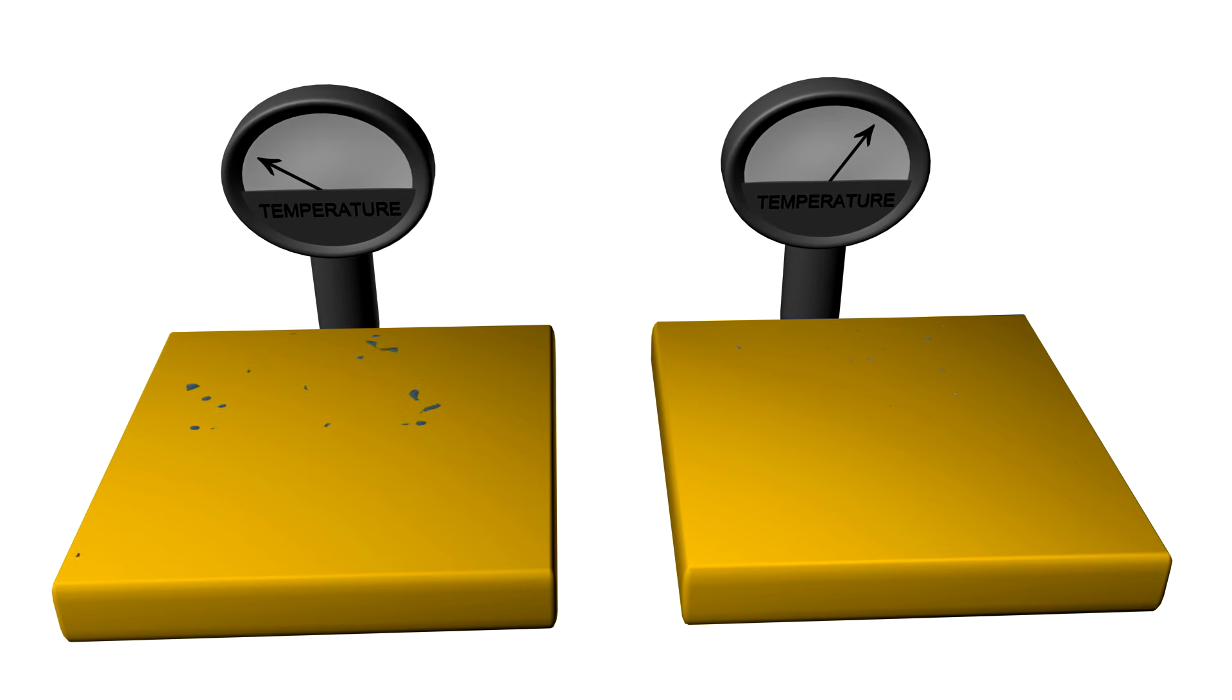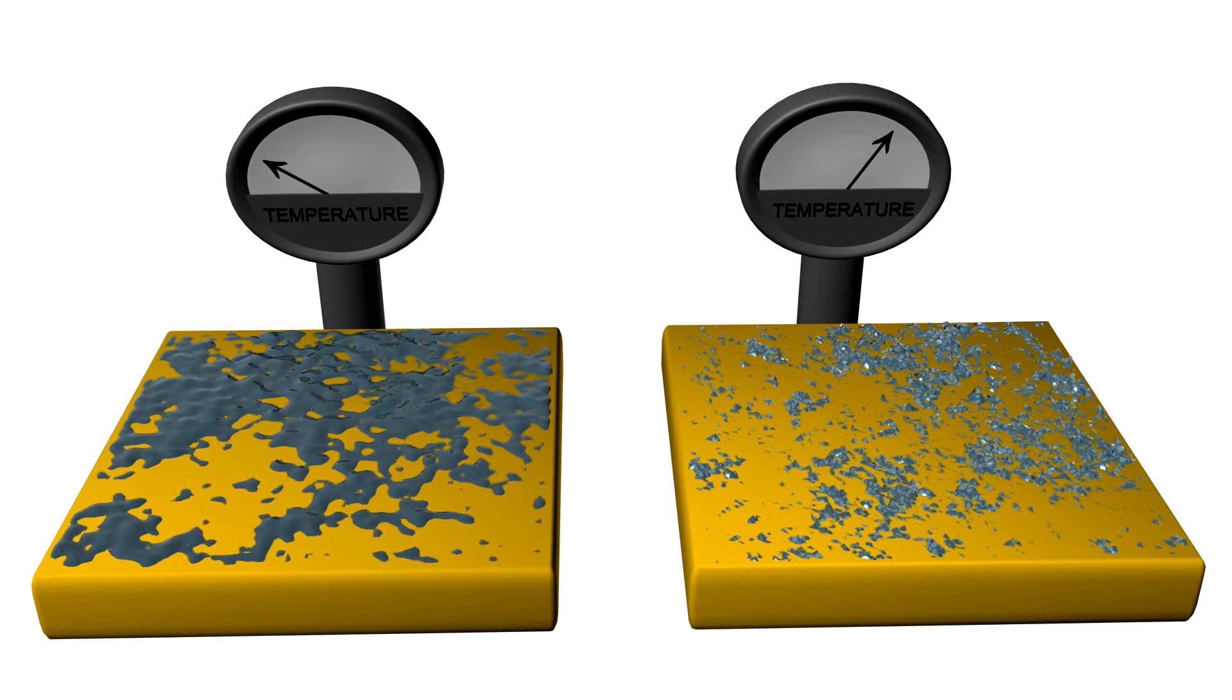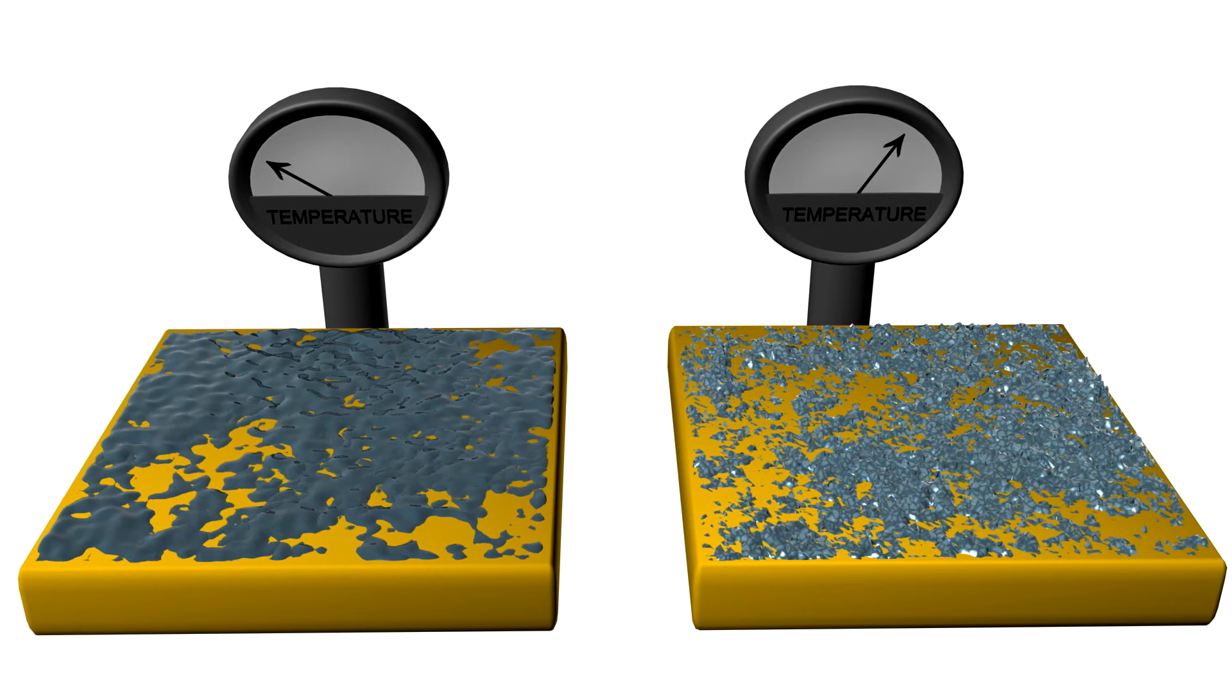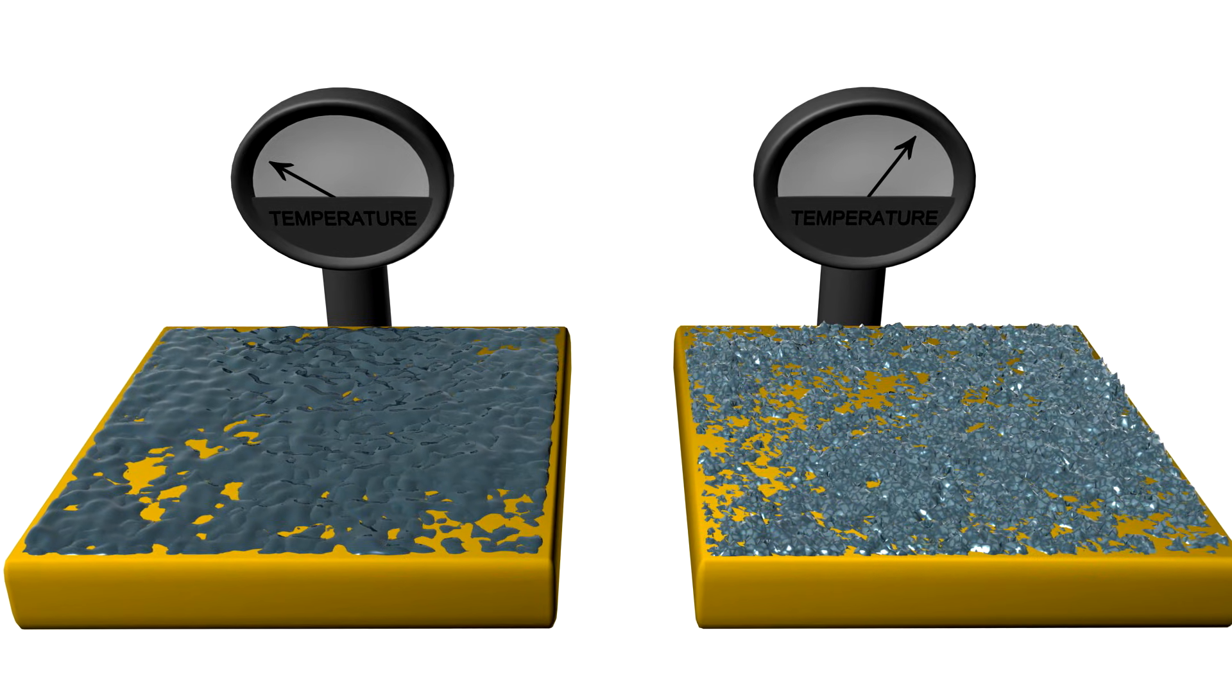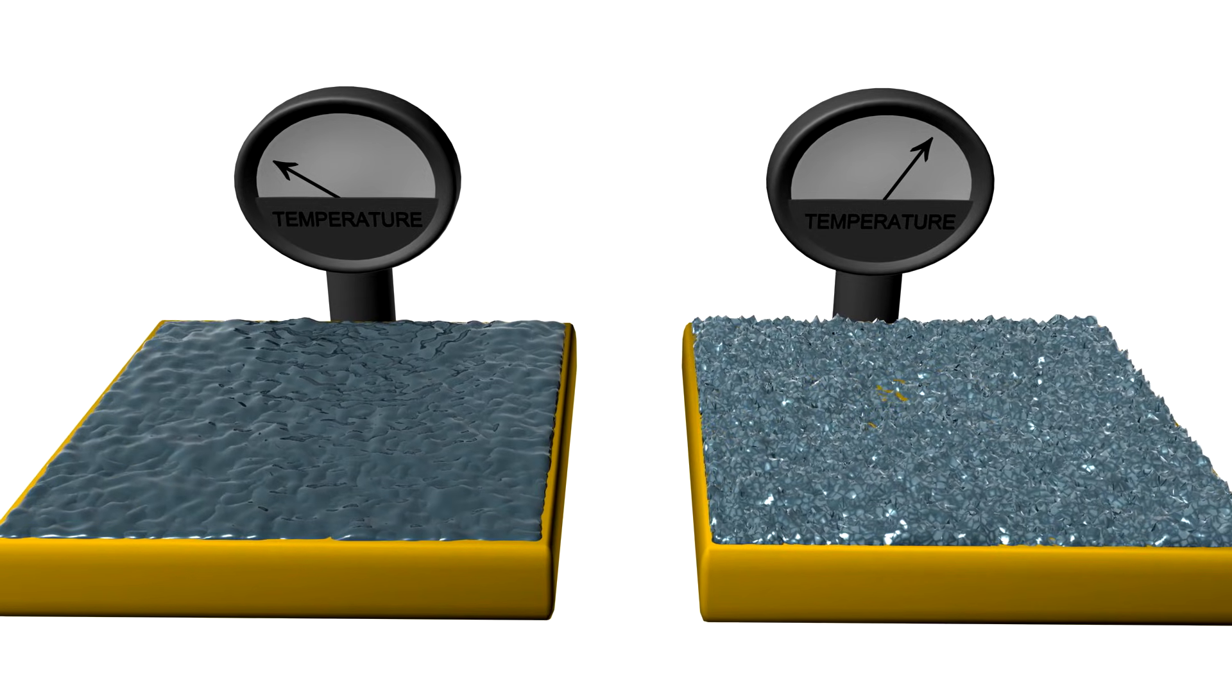Anyhow, the crystallinity of the grown films also depends strongly on the temperature of the substrate. Films deposited at higher temperatures are normally crystalline, while films made at lower temperatures are rather amorphous.